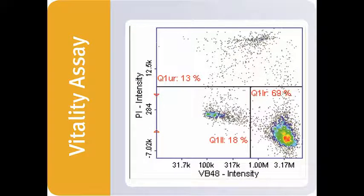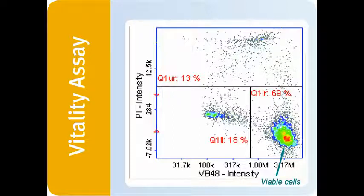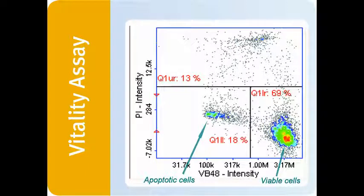Cells with high Vitebrite 48 intensity are viable cells. Cells with low Vitebrite 48 intensity and low propidium iodide intensity are apoptotic cells. Cells with low Vitebrite 48 intensity and high propidium iodide intensity are non-viable cells.